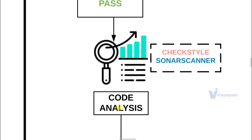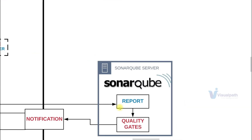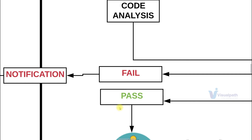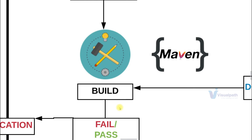For code analysis we are going to use Checkstyle and SonarQube Scanner. These tools will scan the code, a report will be generated and uploaded to the SonarQube server. SonarQube server will compare it with its quality gates. If you pass the quality gate the next job gets triggered; if it fails, a failure notification is sent and the pipeline stops. If it's a success, Maven is going to build the artifact — in code testing Maven does unit tests, here Maven builds the artifact.